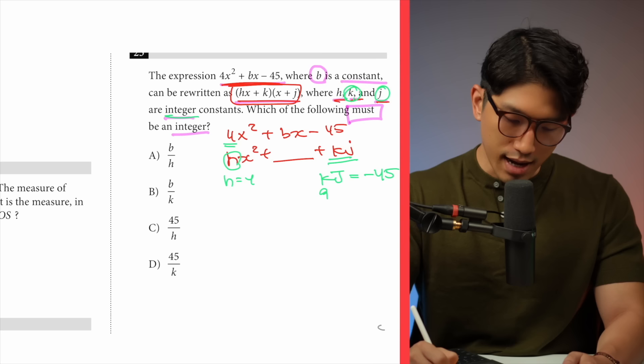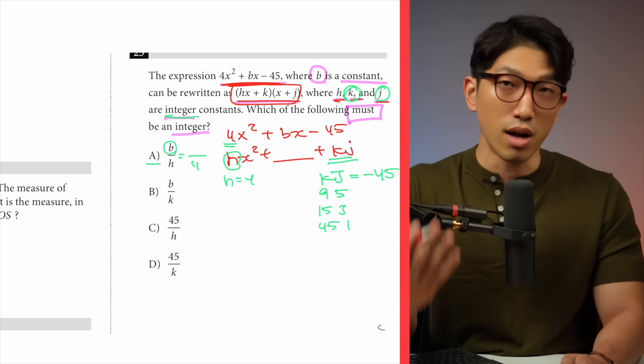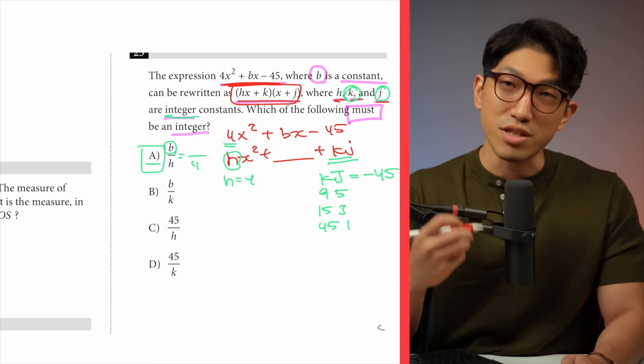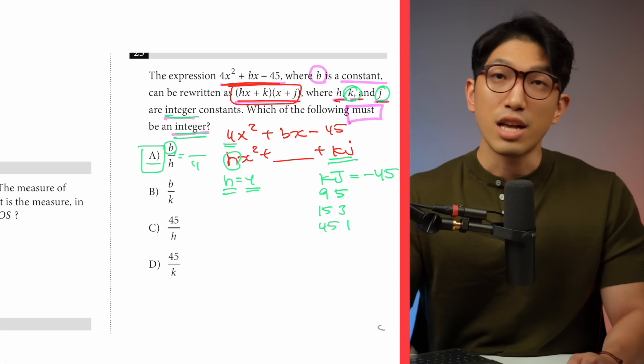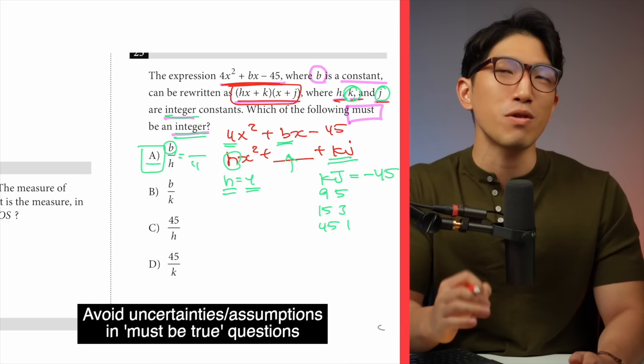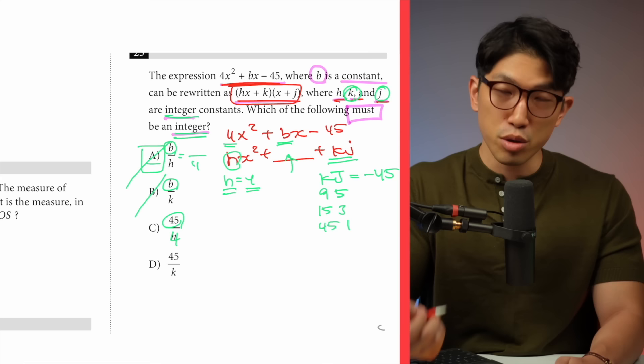Now let's find out which choices cannot be the answer. For choice A, we have b over h, and h equals 4. As long as b is a multiple of 4 that gives a whole number, but we don't know exactly what b is — unlike h, which we know is exactly 4. b could be anything, so there's too much uncertainty. We won't pick choice A or B for the same reason. For choice C, 45 over h is 45 over 4, and 45 is not a multiple of 4, so it won't be an integer. Choice C is out.